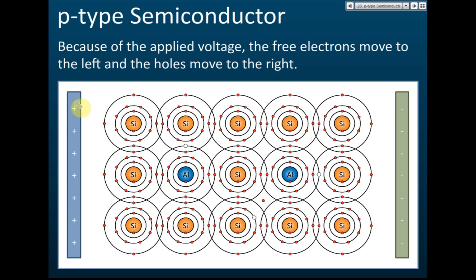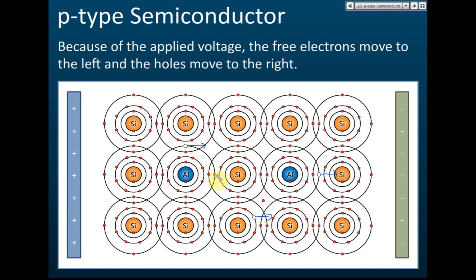If you apply a voltage with positive and negative plates, the holes — which carry positive charge — will move toward the negative terminal, to the left. The electrons here jump across and the hole effectively moves in that direction. The free electrons will move toward the positive terminal. You must know this as it may be asked in an exam.